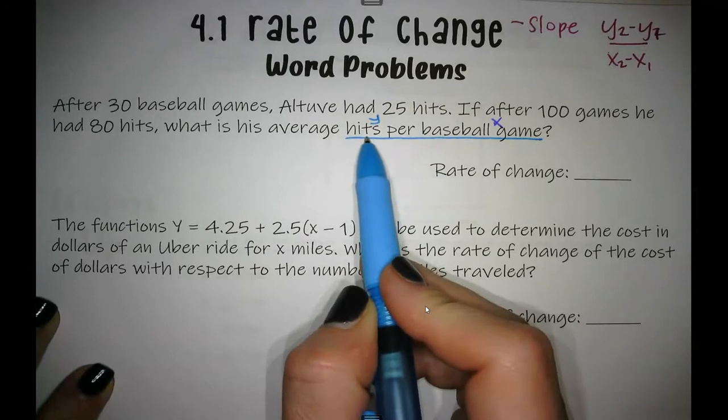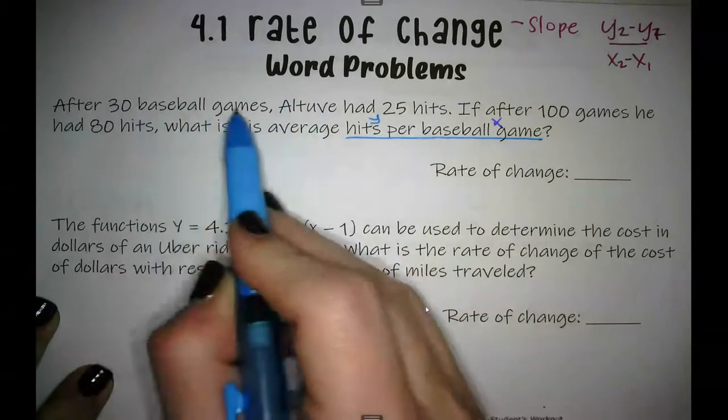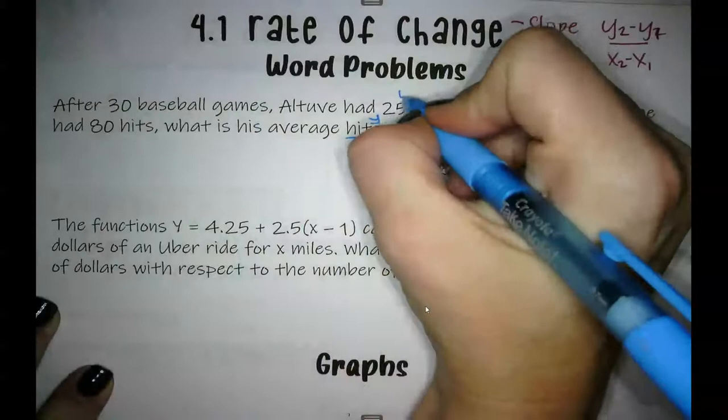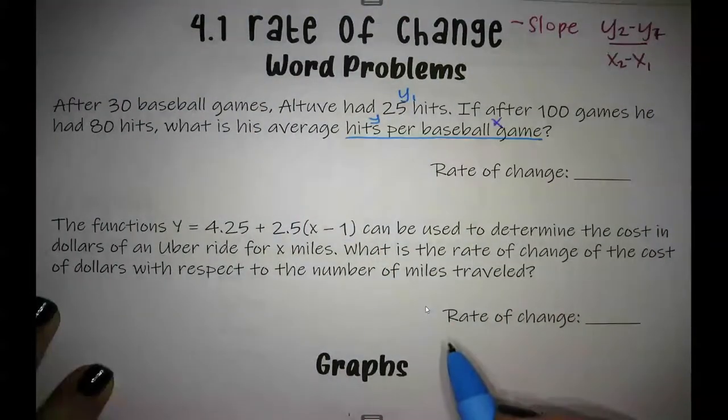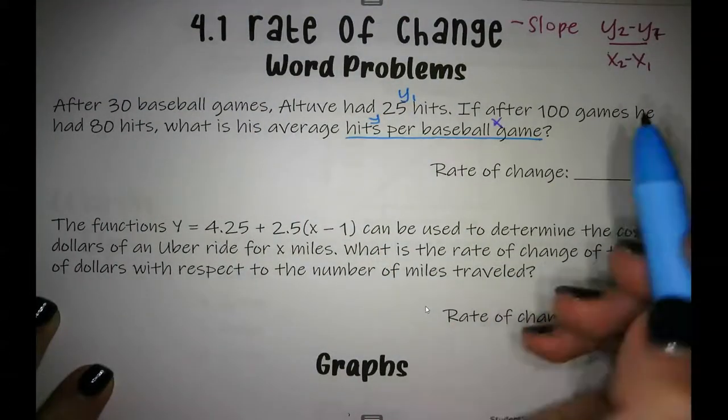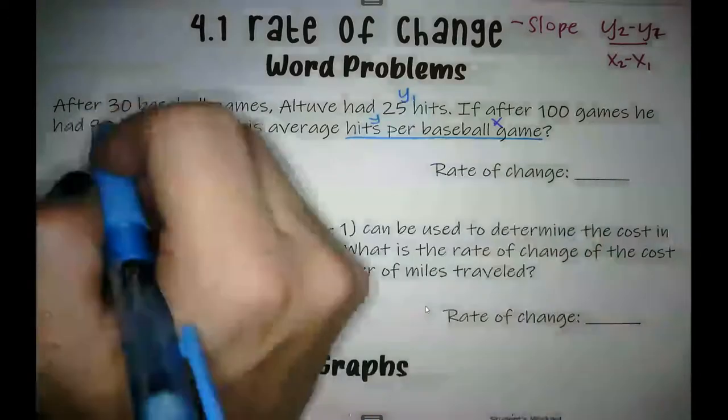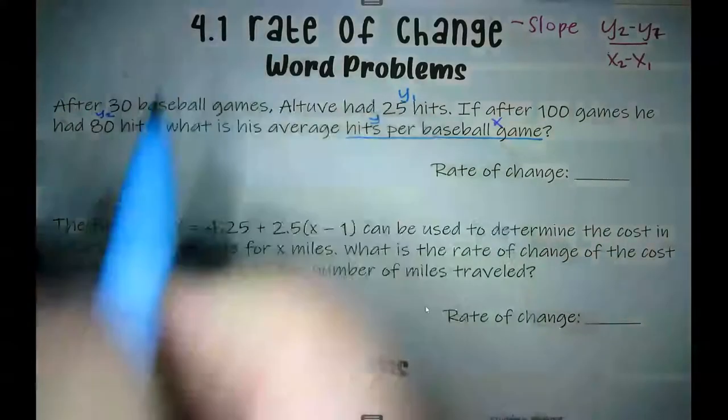We're looking for hits for Y. So when I read back over this, this is Y1, 25 is Y1. After 100 games, 80 hits, so this is Y2.